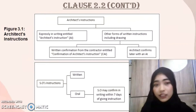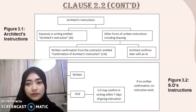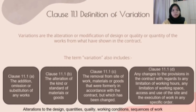This means an instruction will not take effect unless entitled as AI or CAI, regardless of whether it is in writing or otherwise. Here you can see the differences between the Architect's Instruction and the SO Instruction. Clause 11.1 - Definition of Variation. Variation is the alteration or modification of design, quality or quantity of the work from what has been shown in the contract. This includes Clause 11.1a - addition, omission or substitution of any works; Clause 11.1b - alteration of the kind or standard of material or goods; Clause 11.1c - removal from site of work, materials or goods formally in accordance with the contract but which have been changed; and also any changes to provisions in the contract regarding limitation of working hours, limitation of working space, access and use of the site, and the execution of work in any specific order.